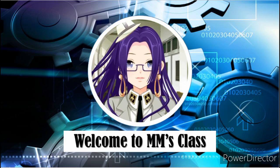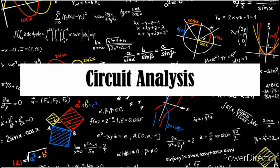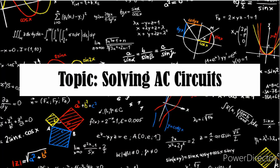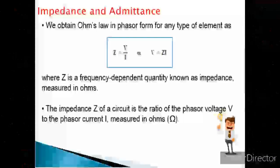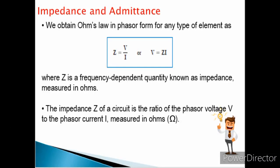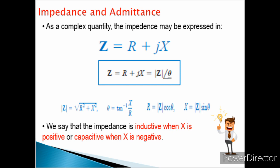Welcome to MM Class. Today we will be discussing circuit analysis — specifically, solving AC circuits. We obtain Ohm's law in phasor form as Z = V/I, where Z is a frequency-dependent quantity known as impedance, measured in ohms. As a complex quantity, impedance is expressed as Z = R + jX, where R is the resistance and jX is the reactance. Impedance is inductive when X is positive and capacitive when X is negative.